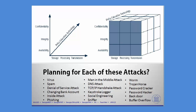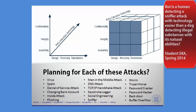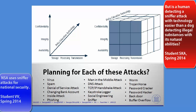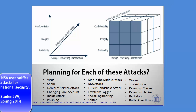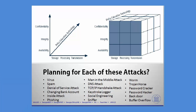Let's start with a sniffer — we'll start at the bottom and work up. For a sniffer, you can typically detect that there is a sniffer on the network using technology. Education and policy don't help very much — they help a little bit, but technology is going to be your principal approach within that attack vector.